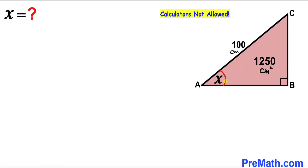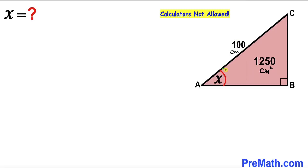Welcome to pre-math. In this video we have got a right triangle ABC such that the area of this triangle is 1250 centimeters square, whereas the hypotenuse AC of this right triangle is 100 centimeters. Furthermore, angle BAC is represented by x, and our task is to calculate the value of angle x without using calculators of any kind.